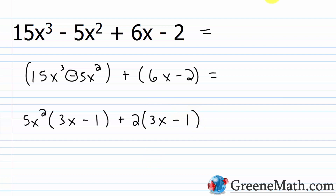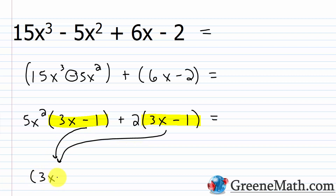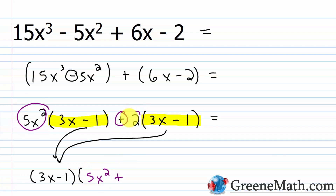We have a common binomial factor of (3x - 1). Pulling that out, we get (3x - 1)(5x² + 2). So we've factored 15x³ - 5x² + 6x - 2 as the quantity (3x - 1) times the quantity (5x² + 2). Pretty easy.